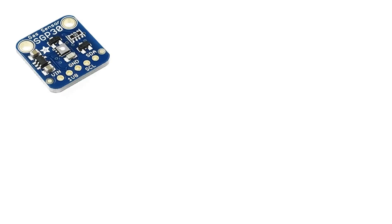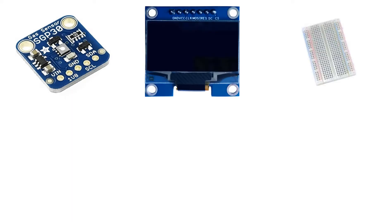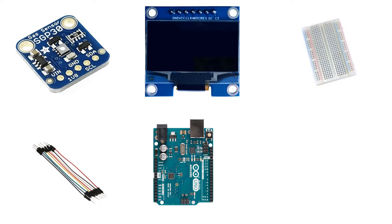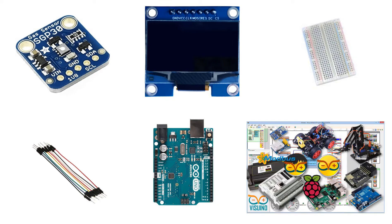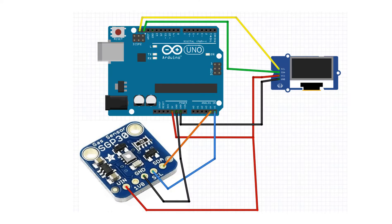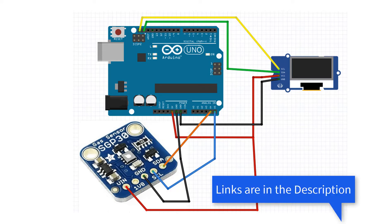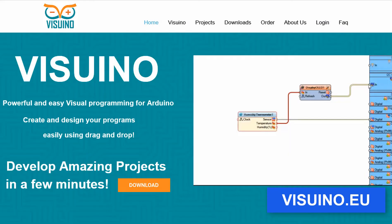For this project you will need a SGP30 air quality sensor, OLED I2C display, breadboard, jumper wires, Arduino, and Visuino software. Wire everything according to this schematic, then go to Visuino.eu and download and install Visuino software.